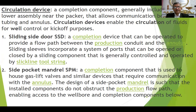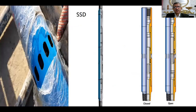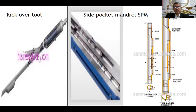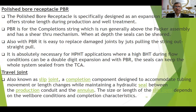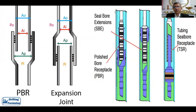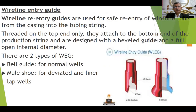Then we can move to circulation devices. We have two main types: sliding side door (SSD) and side pocket mandrel. The mechanism and types of valves that we run inside the side pocket mandrel. Then flow coupling and blast joint — why do we use them. Then polish bore receptacle and travel joint — this is to contain the movement of the tubing during injection or production when temperature goes up or goes down. Then wireline entry guide: when we take the wireline or coil tubing out of the tubing and re-enter it safely without cutting it. We have two types: bell guide and mule shoe.